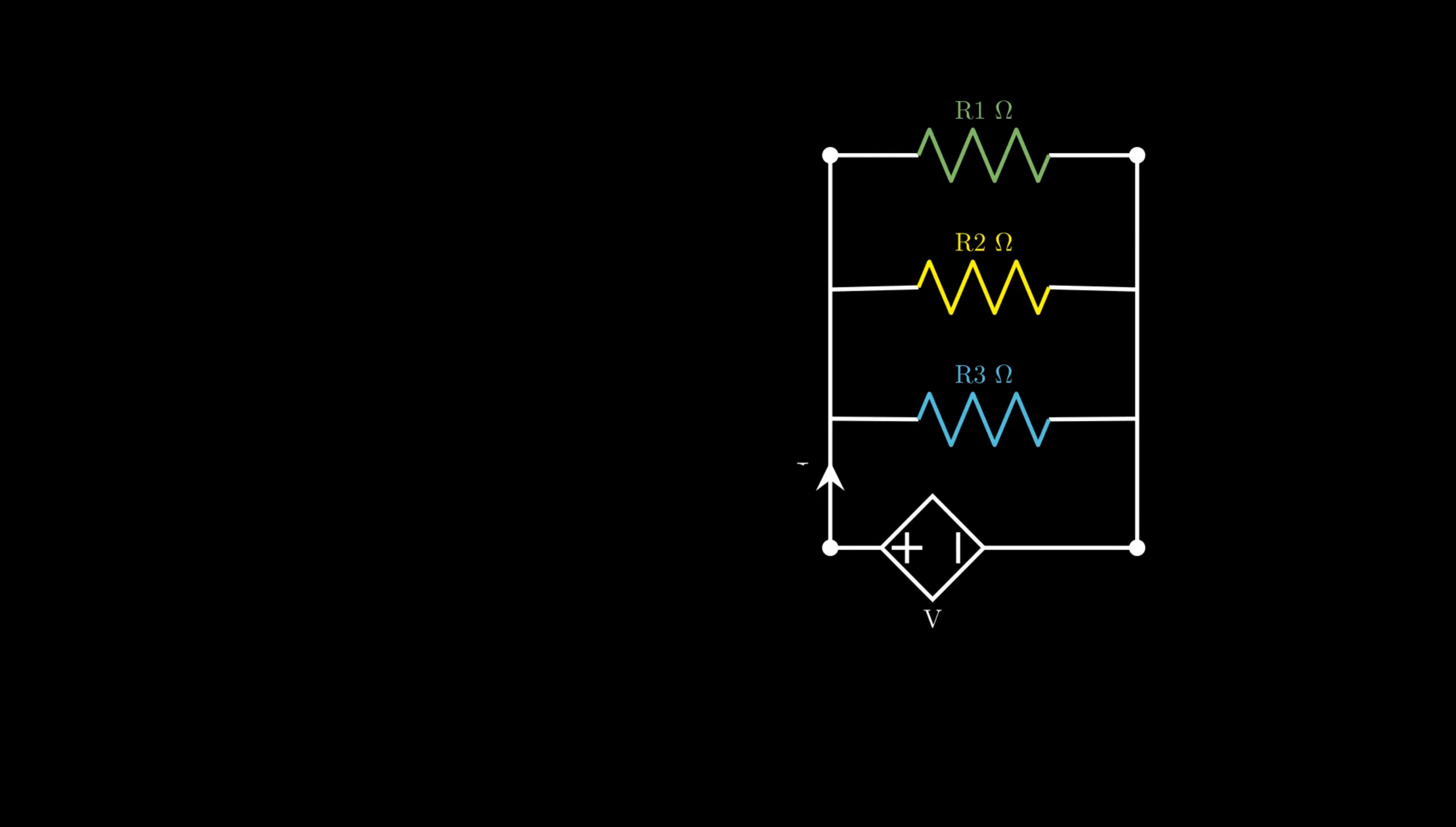As current is different for each resistor, the total current through the network is the sum of I1 plus I2 plus I3, where I1, I2 and I3 are the current through resistors R1, R2 and R3 respectively.